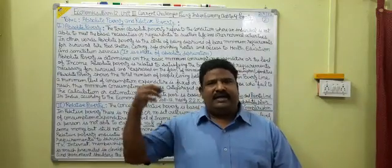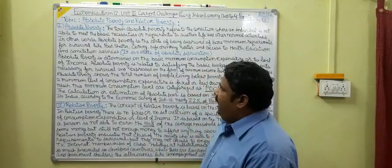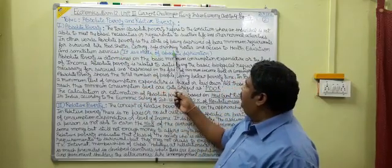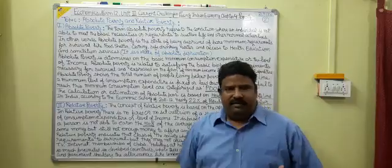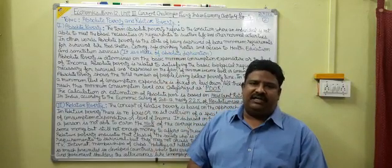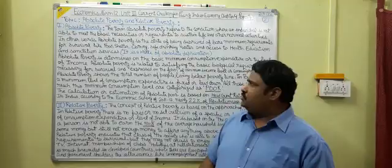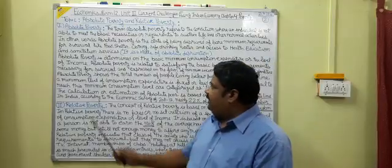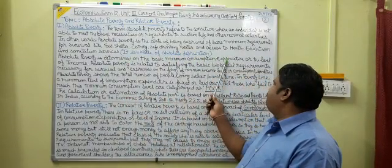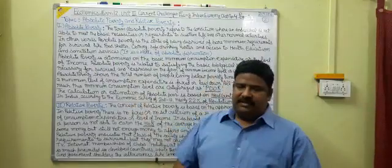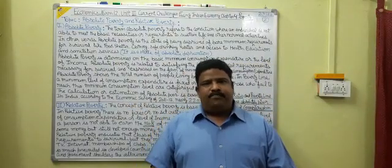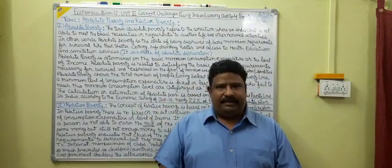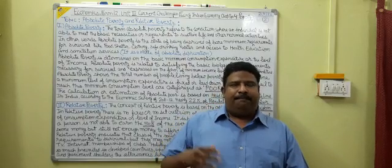A person or individual who is not able to fulfill or satisfy these essential needs is considered poor according to the concept of absolute poverty. It is a state of absolute deprivation - totally deprived of such essential commodities and services. Absolute poverty is determined on the basis of minimum consumption expenditure or the level of income to fulfill these essential elements of life.